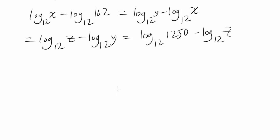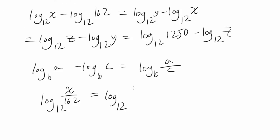Can we make something out of this? We know log base B of A minus log base B of C is equal to log base B of A divided by C. So we can simplify it as log base 12 of X over 162, which is equal to log base 12 of Y over X, which is equal to log base 12 of Z over Y, which is equal to log base 12 of 1250 over Z.